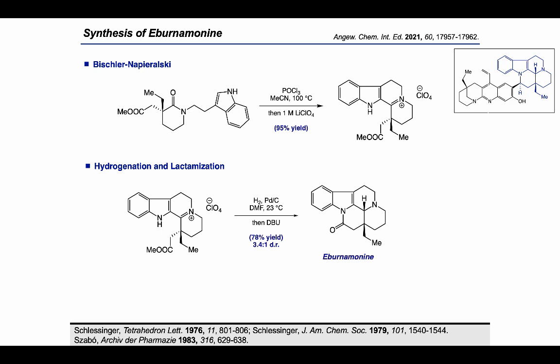The final steps to complete the synthesis of Ibernamonine consist of Bischler–Napieralski cyclization, hydrogenation, and lactamization. Subjecting the iminium precursor to phosphoryl chloride in acetonitrile afforded the iminium perchlorate in 95% yield. The choice of solvent proved critical for the iminium reduction: using DMF instead of methanol gave a 3.4:1 mixture of cis and trans products. Subsequent addition of DBU in the same pot afforded Ibernamonine and epi-Ibernamonine in 78% yield, and the two isomers were separable by flash chromatography.